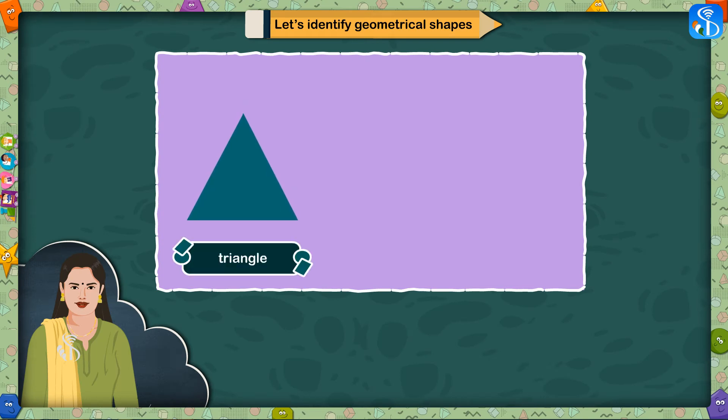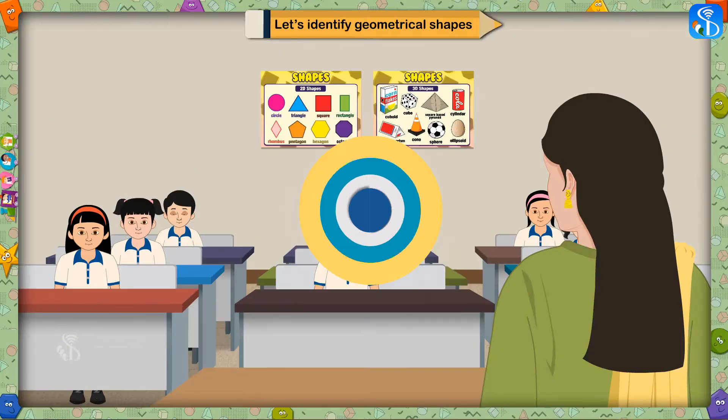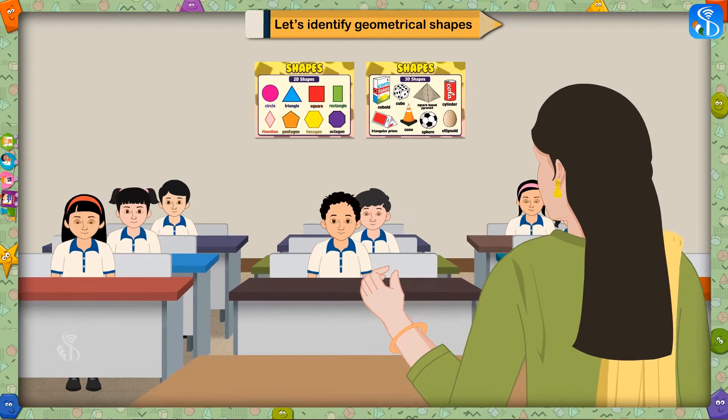Children, you already know the different shapes like a triangle, four-sided figure, and a circle. These shapes are known as geometrical shapes. Today we are going to learn about these geometrical shapes.